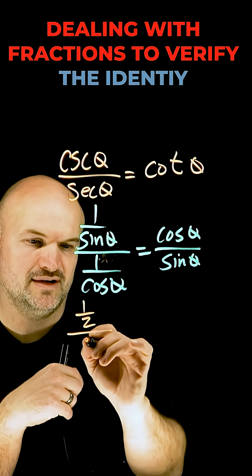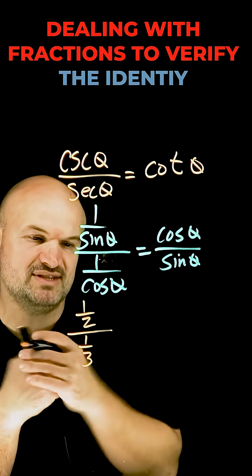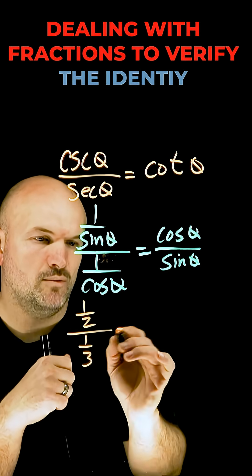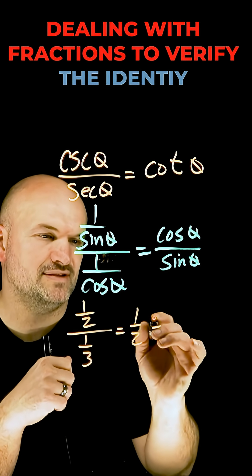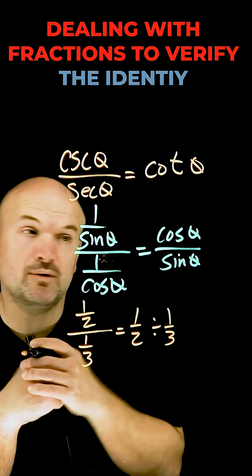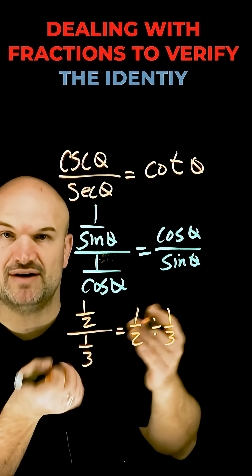If I had like one half divided by one third, well what's another way we could think about that? One way we could think about that is one half divided by one third. Now do you remember what we do with fractions when we have a fraction divided by another fraction?